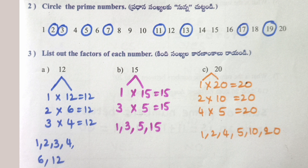List out the factors of each number. A. 12: 1×12=12, 2×6=12, 3×4=12. Factors of 12 are 1, 2, 3, 4, 6, 12. B. 15: 1×15=15, 3×5=15. Factors of 15 are 1, 3, 5, 15. C. 20: 1×20=20, 2×10=20, 4×5=20. Factors of 20 are 1, 2, 4, 5, 10, 20.